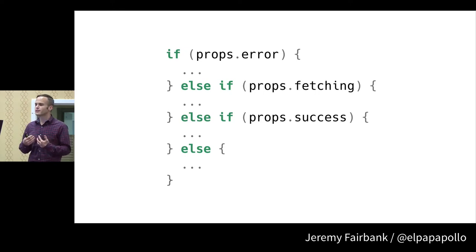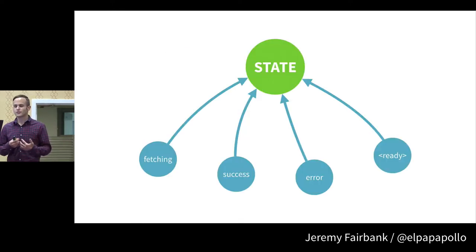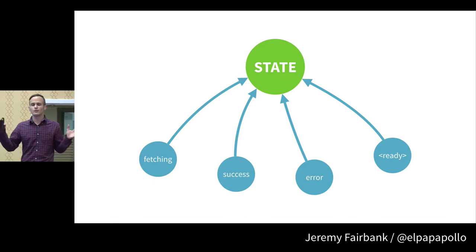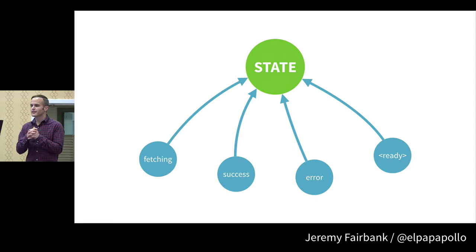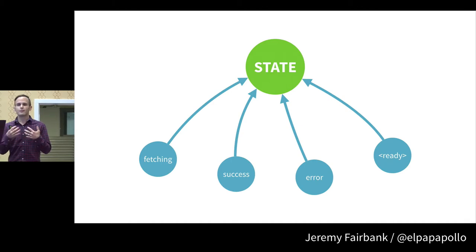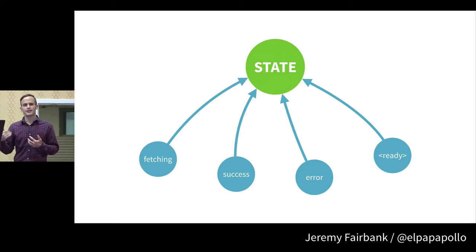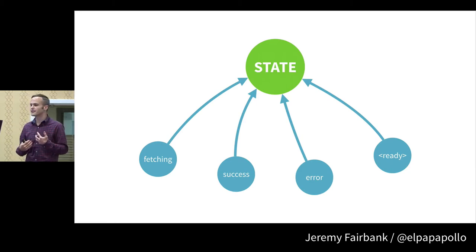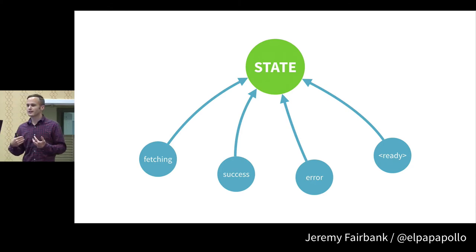We're prone to display the wrong thing to a user if we're not careful. The ultimate problem is that I thought these properties were separate, unrelated concepts. Instead they are intrinsically interconnected — a set of states where you can really only be in one at a time. I had multiple pieces representing one thing, making it harder to reason about the overall state of the application. This was a rampant pattern I kept using and unfortunately brought over to Elm when I first started using it.